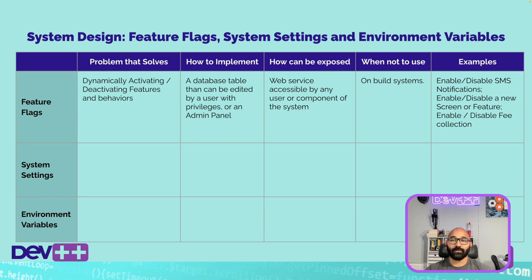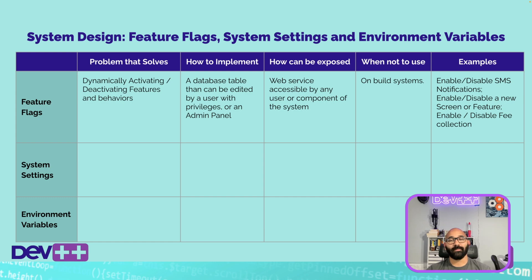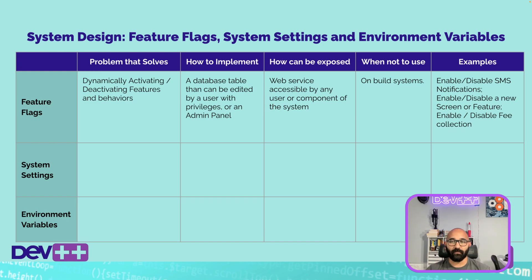When is it not a good idea to use feature flags? A good example is build systems. You don't want to transpile or compile feature flags, because if you deploy a new module and things go sideways, you'd have to do another build just to disable it. Some good examples of proper use are enabling and disabling SMS notifications, a new screen, or a new feature, and enabling or disabling fee collection if you're doing transactions or payments.